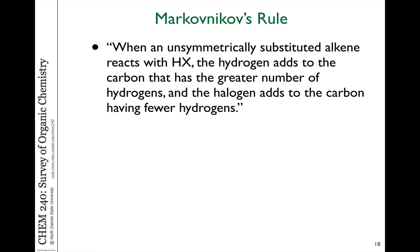How do we explain this? A Russian chemist came up with a rule of thumb to describe this behavior — basically a result of empirical observation. Markovnikov originally stated this: when an unsymmetrically substituted alkene reacts with a hydrogen halide, the hydrogen adds to the carbon that has the greater number of hydrogens, the less substituted one, and the halogen adds to the carbon having fewer hydrogens, the more substituted one. That simply states what's observed — it doesn't explain why, but it's an empirical rule used to predict the outcome of a reaction.